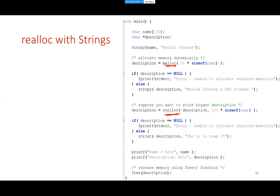Good question: when you free a pointer, the pointer still exists but it's set to null — it's no longer pointing to anything. If you use it again without reallocating, you'll get a core dump error. Any other questions?